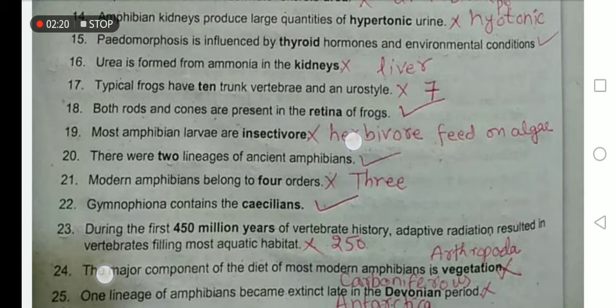Most amphibian larvae are insectivorous. No — their adults are insectivorous. Their larvae are herbivorous, mostly feeding on algae.